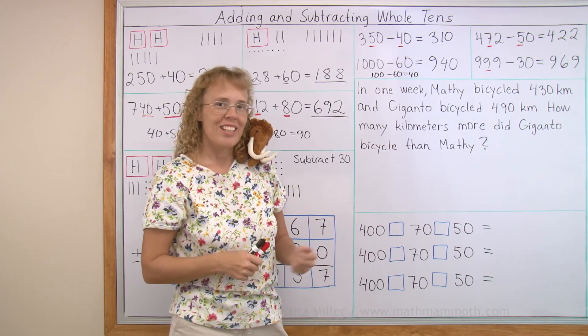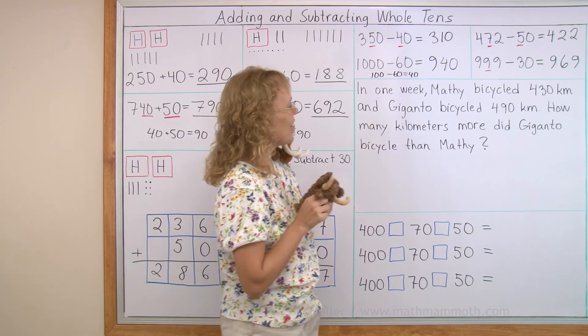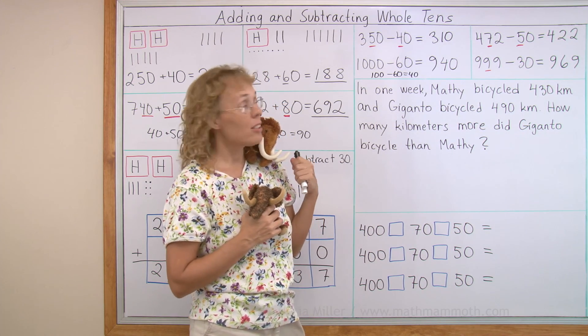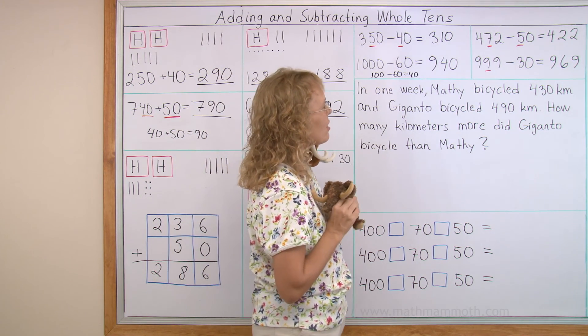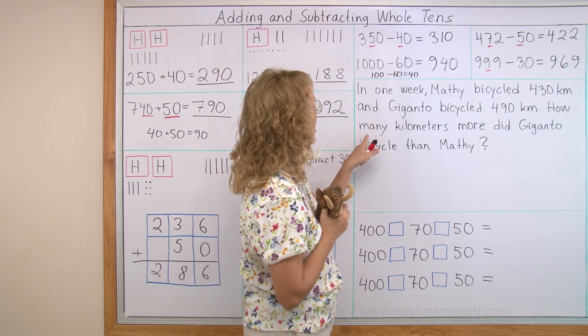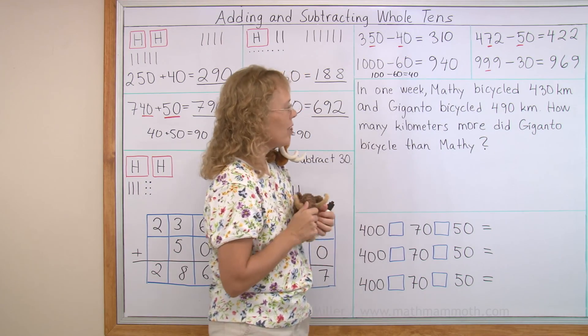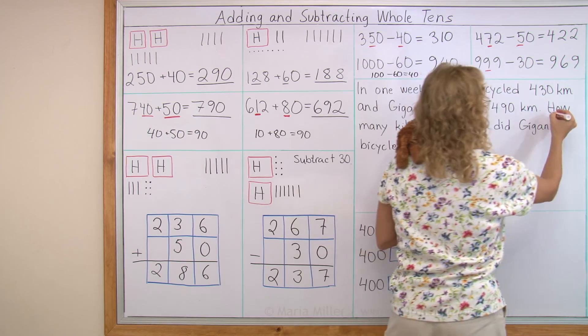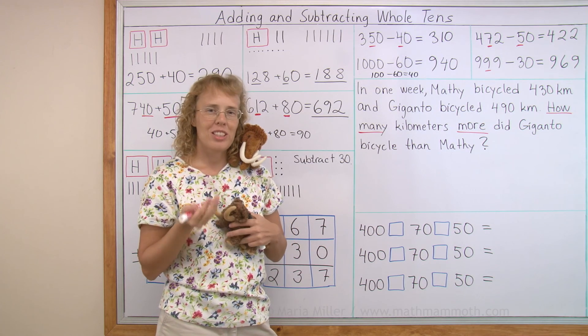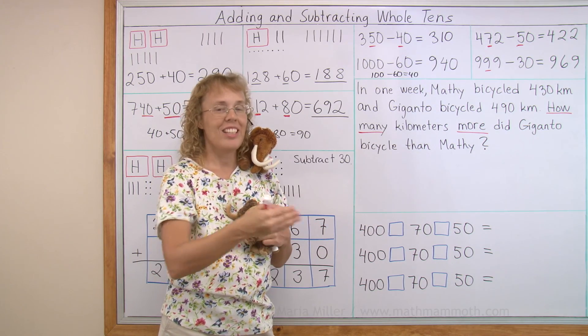Next, we're going to feature Matthew and Giganto. Here, this is Giganto, Matthew's cousin. And they have a word problem here. Let's see, in one week, Matthew bicycled 430 kilometers, and Giganto bicycled 490 kilometers. Okay, you were practicing or whatever, right? Yeah, practicing bicycling. How many kilometers more did Giganto bicycle than Matthew? 30. Okay, how many kilometers more? This is a how many more question. How many more? And those are always solved by subtracting, or you can think of how many more addition, right? Two ways to think about it.